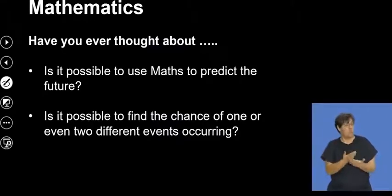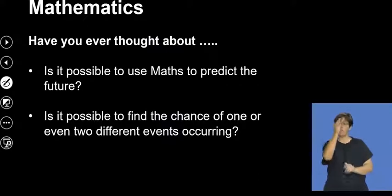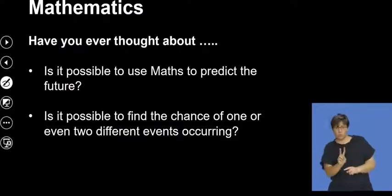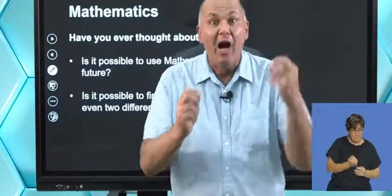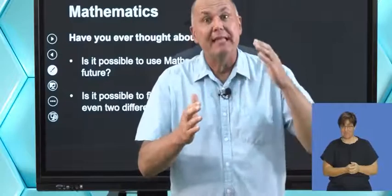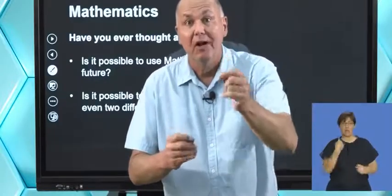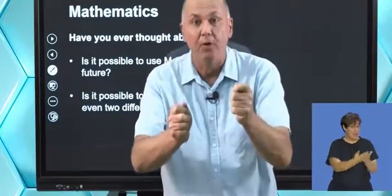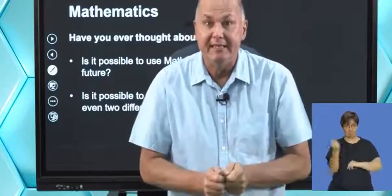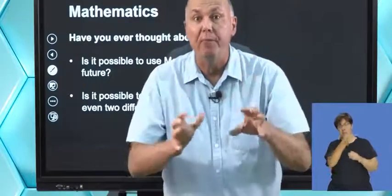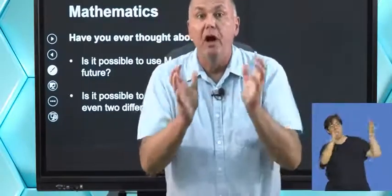The first question is: is it possible to use maths to predict the future? Is it possible to find the chance of one or even two different events occurring? Well, fortunately the probability rules help us with exactly that idea. It might not be able to tell us definitely what's going to happen tomorrow, but it will give us an idea of the chance of whether something can happen or won't happen on a particular date. So let's get a big picture idea by going through a concept map of all you need to know about probability.